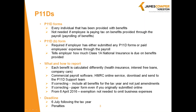P11D and P11D(b) forms can be amended if there are any errors or omissions. The amended P11D form must include all benefits originally reported, plus the amendment or omission, not just the new item being reported, and it must be submitted on paper — even if the original was submitted online. A change from 6th April 2016 is that a dispensation is no longer needed to omit business expenses paid to employees, as these were replaced by an automatic exemption.